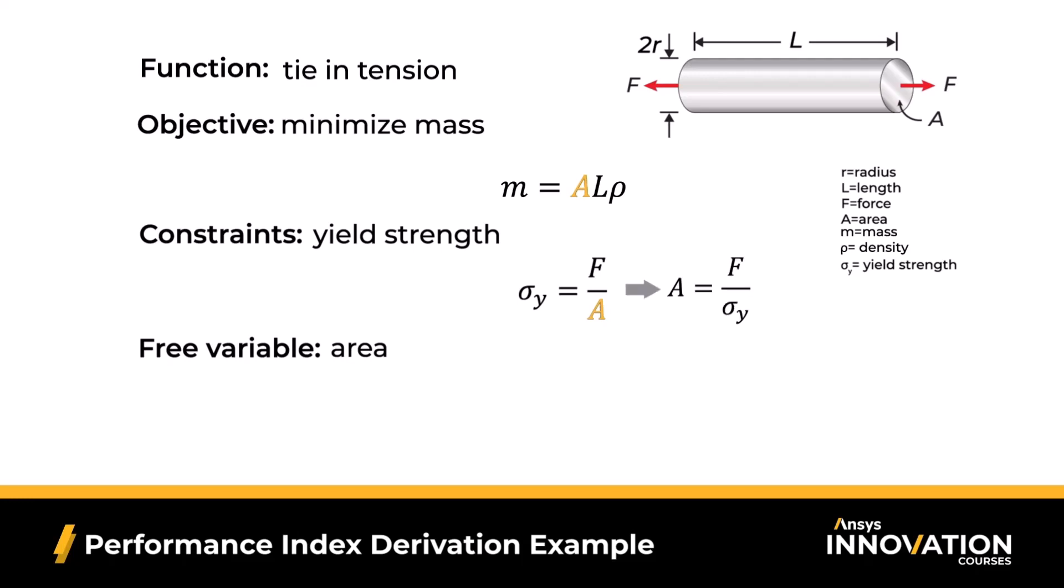Therefore, I rearrange my stress equation at its limit, solving for area, and substituting for the design parameter in my equation for mass, which is our objective function. Doing this gets me the resulting equation shown here. Now, this just looks like a bunch of variables. Where is our material index?